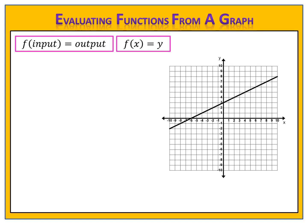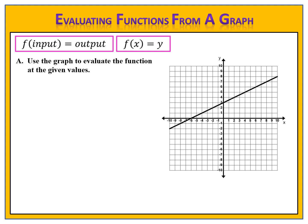Let's suppose we have the graph of a function. This is a linear function, because the graph is a line. The directions ask us to use the graph to evaluate the function at the given values. Here's our first example: f of 0 equals what?